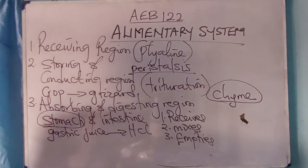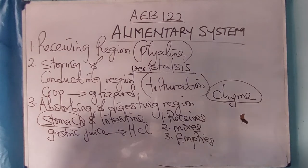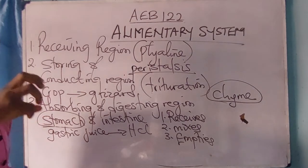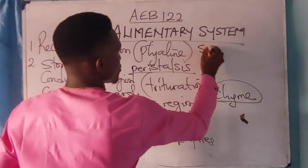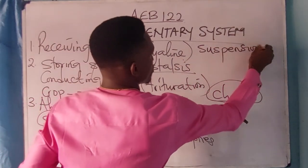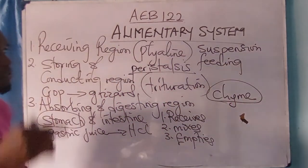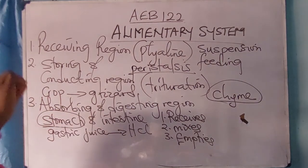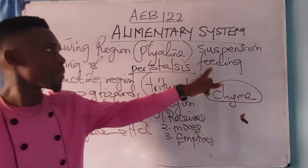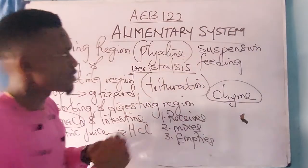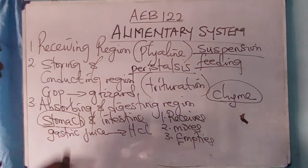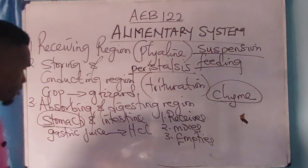Ruminant animals are herbivores. Also, I just recalled — suspension feeding is a characteristic feature of sedentary aquatic animals. I would have mentioned it in the previous video but please take note of that.